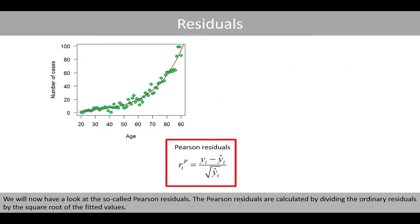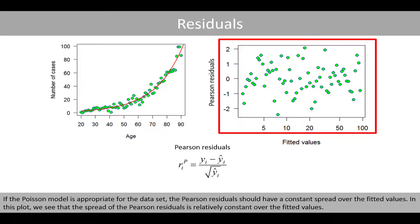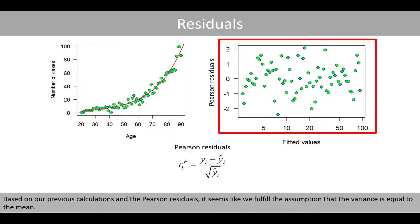We'll now have a look at the so-called Pearson residuals. The Pearson residuals are calculated by dividing the ordinary residuals by the square root of the fitted values. If the Poisson model is appropriate for the data set, the Pearson residuals should have a constant spread over the fitted values. In this plot, we see that the spread of the Pearson residuals is relatively constant over the fitted values. Based on our previous calculations and the Pearson residuals, it seems like we fulfill the assumption that the variance is equal to the mean.